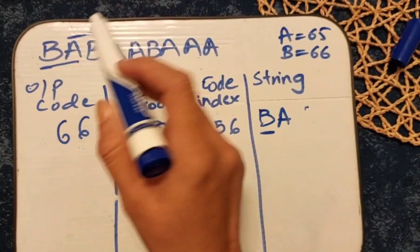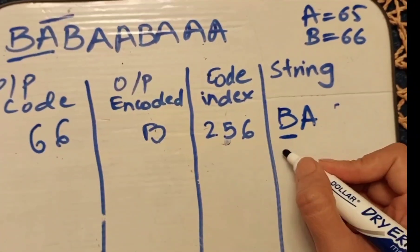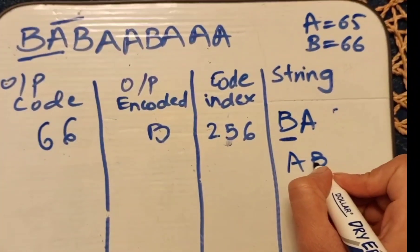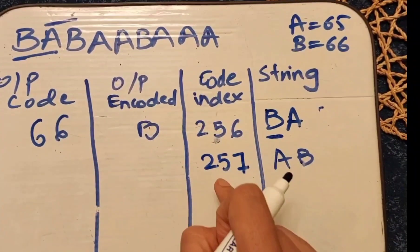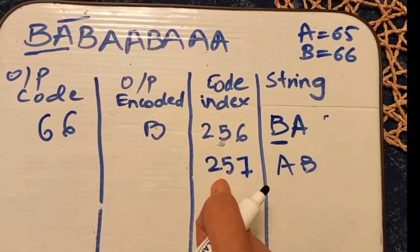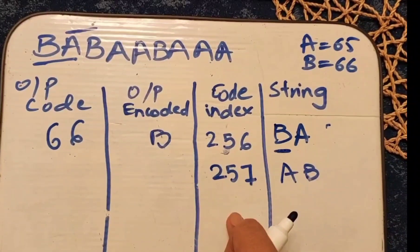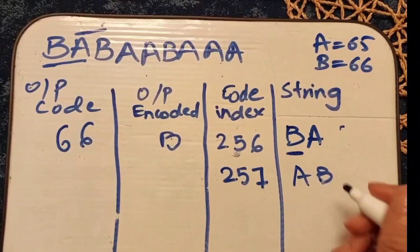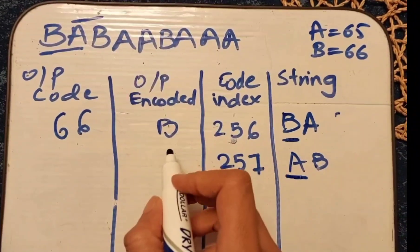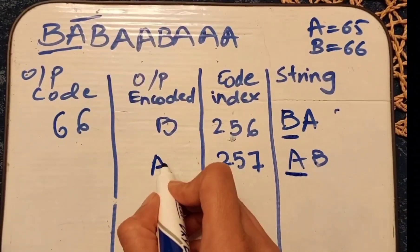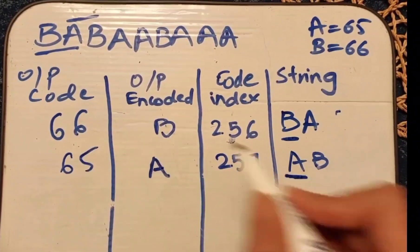The second substring starts from 'a' — we take 'ab'. The next index is 257, incremented by one from 256. The first element of this substring is 'a', so the encoded output is 'a'. The code for 'a' from the dictionary is 65.